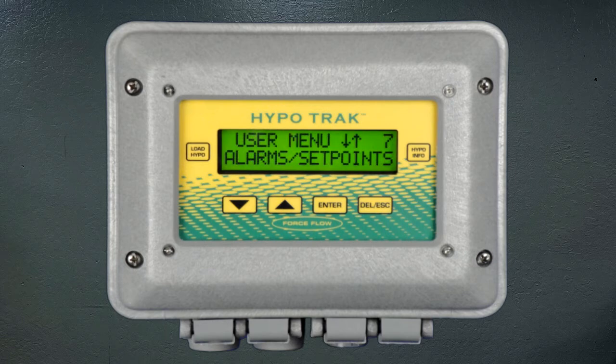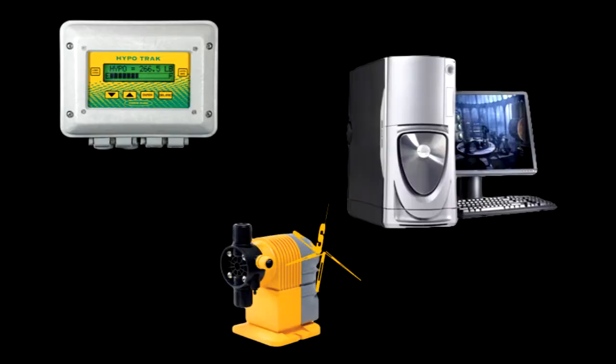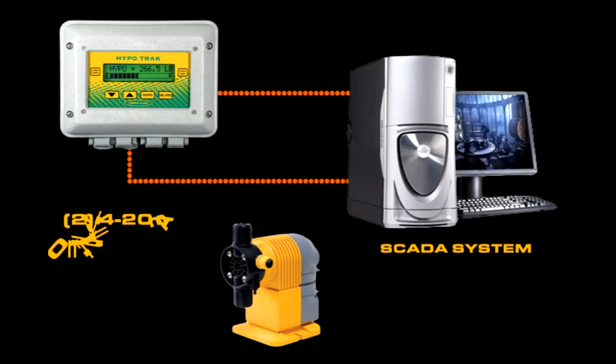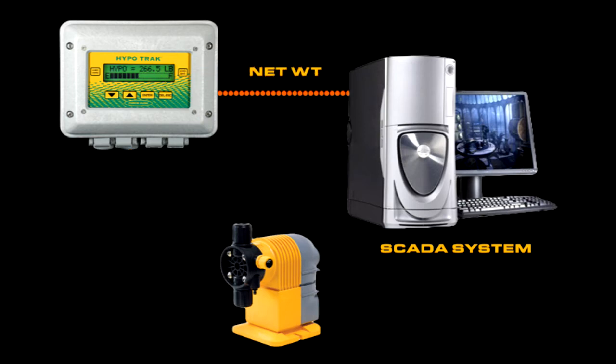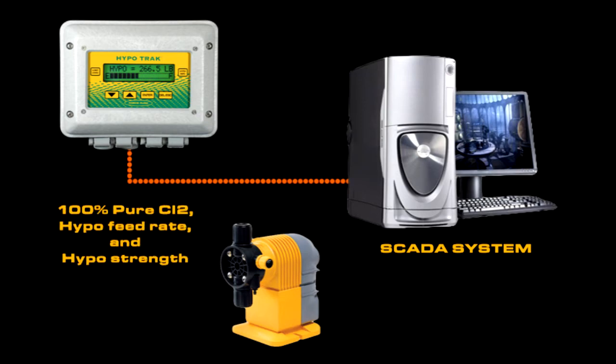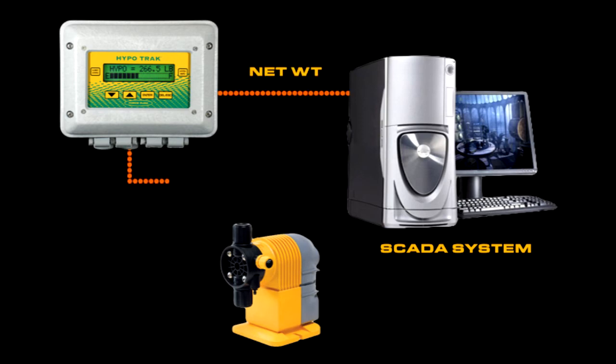Lastly, I'd like to discuss the type of alarms and output signals available to communicate with SCADA systems or metering pumps for automatic control. The HypoTrack has two 4 to 20 milliamp outputs available: one that outputs the net weight or gallons remaining in your tank, and a second that has the option of sending pounds of 100% pure chlorine remaining, current Hypo feed rate, or current Hypo strength. The second 4 to 20 output can also be connected directly to your metering pump to automatically speed up your pump as your Hypo gets weaker over time.